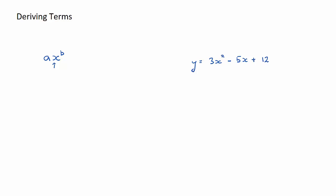If I'm going to now derive this term, the process is we take the power, we multiply it by the coefficient, so b times a, and then we multiply it again by the variable and then subtract one off the power.